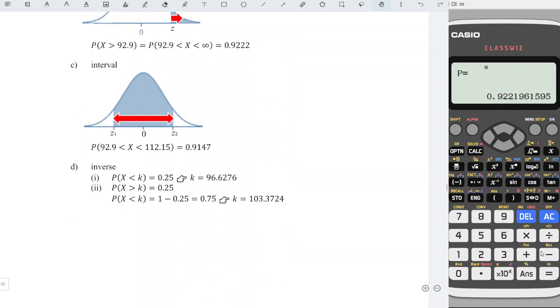For an interval, also the same. Equal again to change the lower and the upper limits. So we have 92.9, press equal. Upper limit: 112.15, press equal. Since sigma and mu exactly the same, when we press equal, we should obtain the probability.